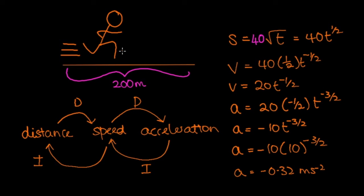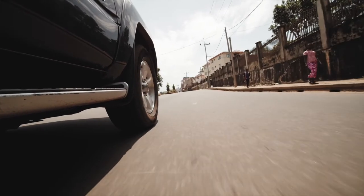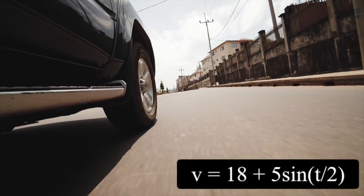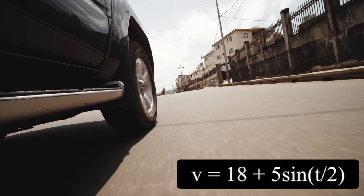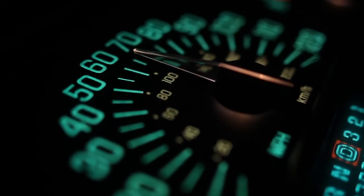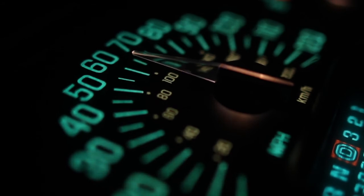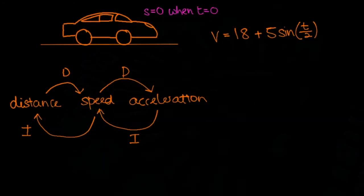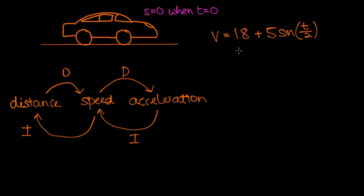For our next variable acceleration problem, we have a car traveling with linear motion at a speed given by v equals 18 plus 5 sine t over 2. Again acceleration is not constant, so we will be using calculus. We're trying to find the distance the car has traveled after t seconds, and to do that we need to integrate our formula for speed.